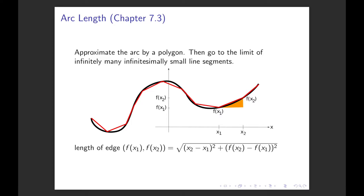We know how to compute its length, namely we can use Pythagoras, and then we have that the length of the red line segment is the distance between the two x-coordinates, so (x₂ - x₁)², plus the square of the distance between the function values, the y-coordinates. That is (f(x₂) - f(x₁))², and of that we need to take the square root.